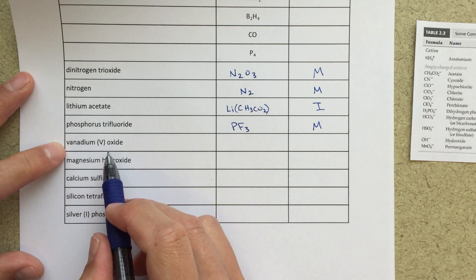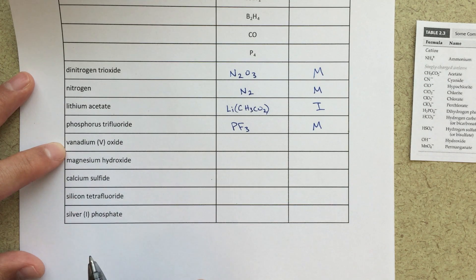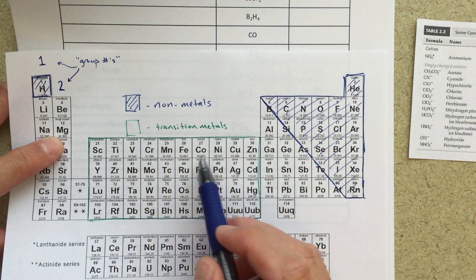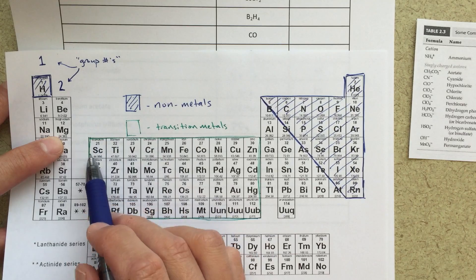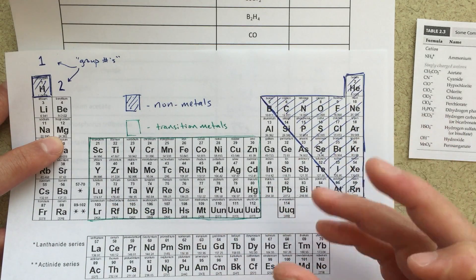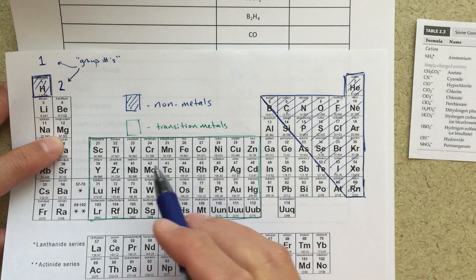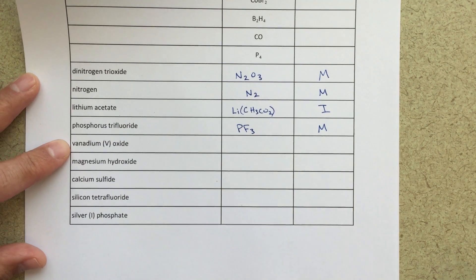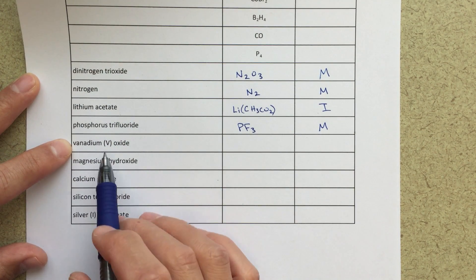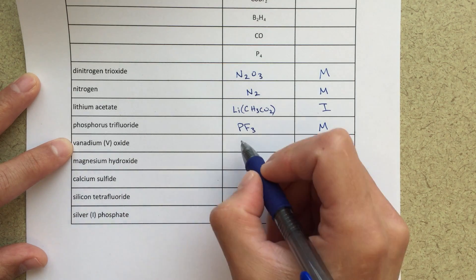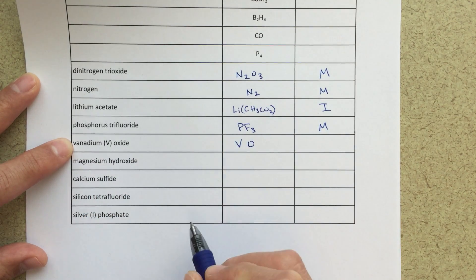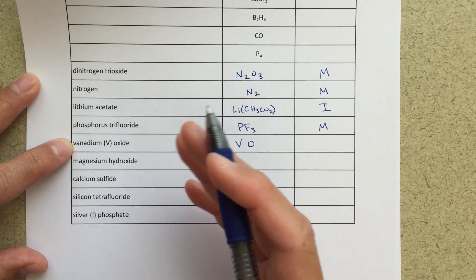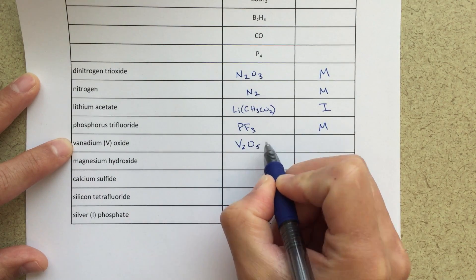Vanadium(V) oxide — what's interesting here is the Roman numeral. That comes into play when we're talking about transition metals. Vanadium is within that transition metal box. These transition metals have variable charges — sometimes plus one, sometimes plus two, sometimes more. So when dealing with transition metals we need to be told what the charge is. This tells us vanadium has a plus five charge. Oxygen has a two minus charge, so I need to figure out how to balance those.